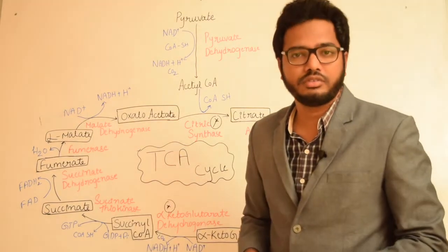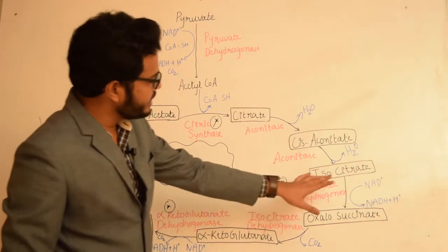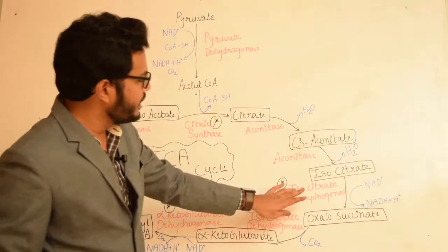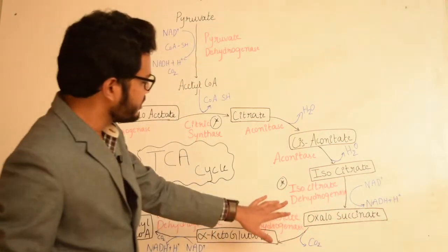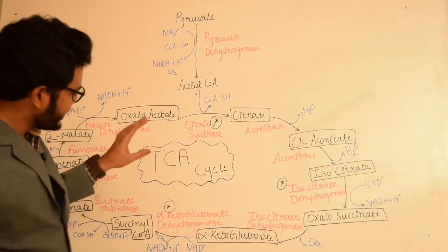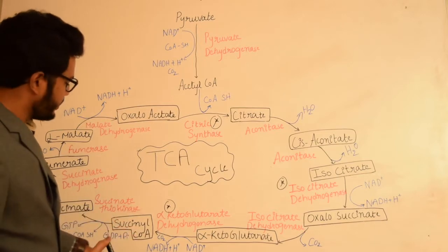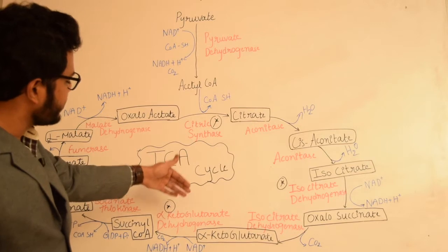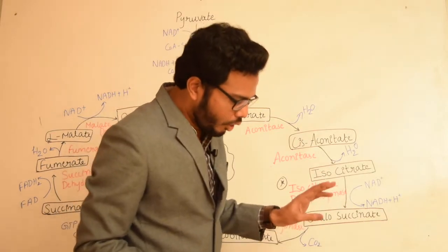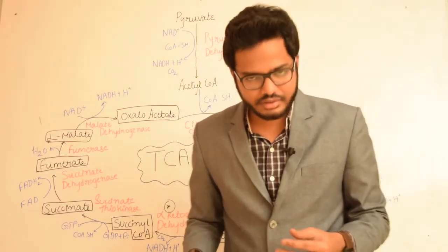Isocitrate dehydrogenase is inhibited by excess NADH or ATP, whereas it is stimulated by ADP. For alpha-ketoglutarate dehydrogenase, the inhibitors are NADH and ATP. When there is excess energy, feedback inhibition leads to deactivation of these dehydrogenases.